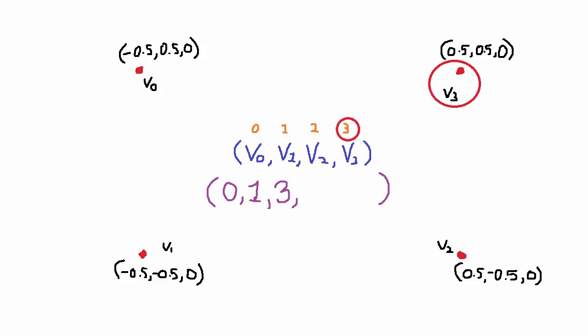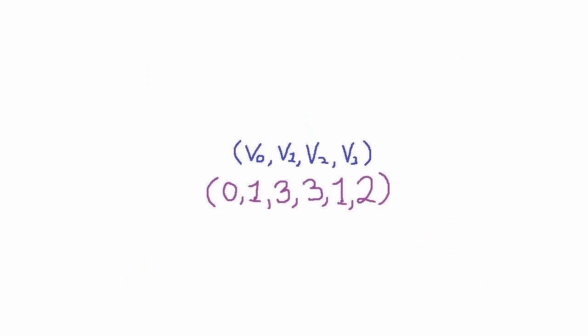And now the same thing for the second triangle. Start at V3, which is in position 3, go counterclockwise to V1, which is in position 1, and finally V2 in position 2. So now we have a different way of representing the quad. We represent it this time using four vertices instead of six, but we also now need an extra set of data, the index buffer, which contains six ints.